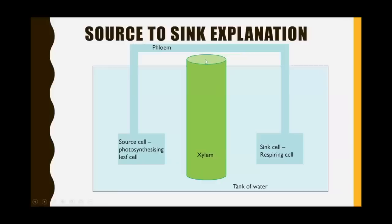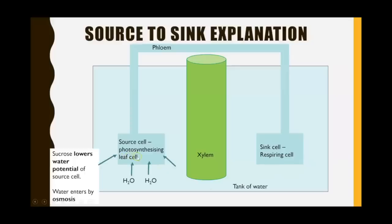Let's look at the source-to-sink mass flow hypothesis in more detail using a basic model. We have a source cell — a leaf cell that is photosynthesizing — connected to a sink cell, which is any respiring cell. The phloem is always next to the xylem, which transports water. Because the photosynthesizing leaf cell creates glucose, sucrose, or other organic substances, those are soluble and lower the water potential of the source cell. As a result, water from surrounding cells moves into the source cell by osmosis.